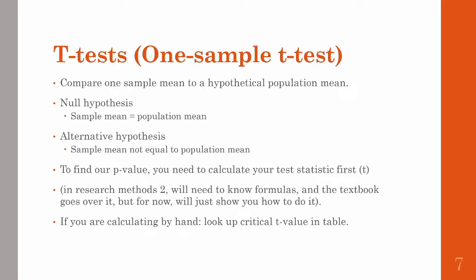So we've done descriptive stats in the last video, so let's get into doing some hypothesis testing. The first one from the t-test family is a one-sample t-test. This is where you compare one variable — one sample mean — to a hypothetical population mean. We set up our null hypothesis to be no difference, so sample mean equals the population mean, and our alternative hypothesis is that the sample mean is simply not equal to the population mean. In order to find our p-value for this test, we have to calculate a test statistic called t, or t-statistic.